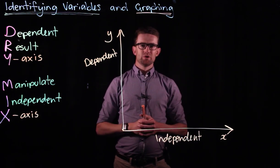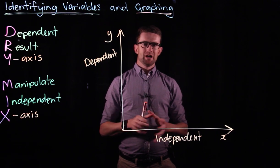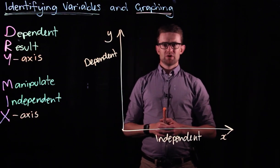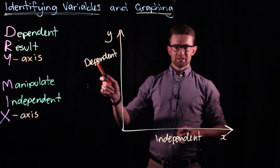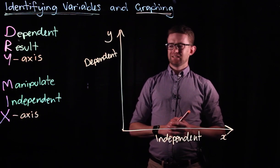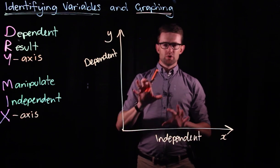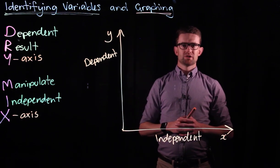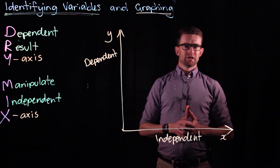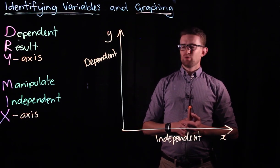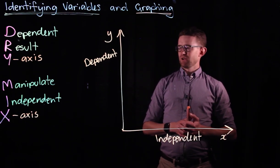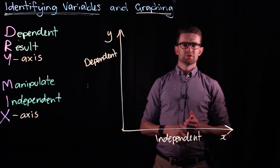Of course the next thing we want to look at is how we plot our graphs correctly. Now that we've correctly labeled the axes we want to sort out our scale and we want to work out how we plot our points correctly. We want to look at drawing a line of best fit, but we'll tackle that in another video. So thanks very much for watching and we'll see you next time.